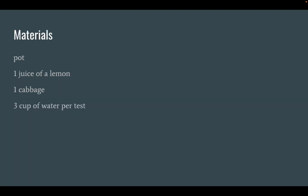Materials needed: one pot of any size, one lemon with the juice — 1/16th of a cup will be put into each cup — one cabbage, 3 cups of water per test, a spatula to stir the pot with, 4 cups to store each of your mixtures, and an oven mitt so you do not burn yourself.